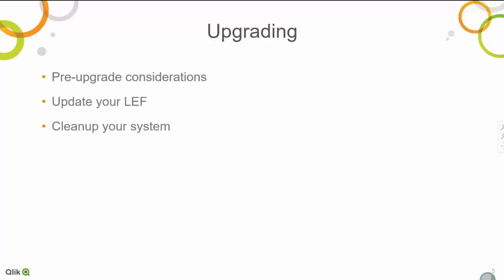You need to make sure that your license enabler file on the system is up to date. When upgrading to a new major version, we check your license to make sure you have a valid license or maintenance agreement. If your maintenance agreement has expired, you will not be able to move to a new major version. So go into the QMC, click on 'Update from Server,' and fetch a new LEF to make sure you are current.